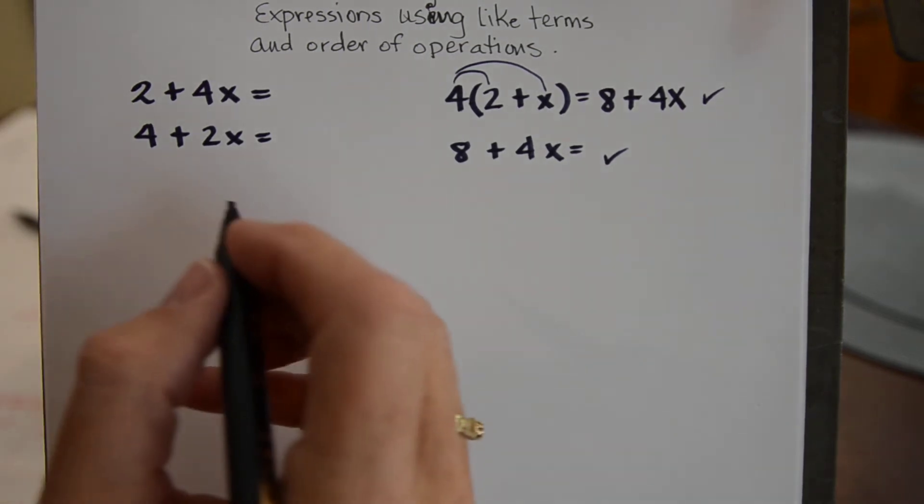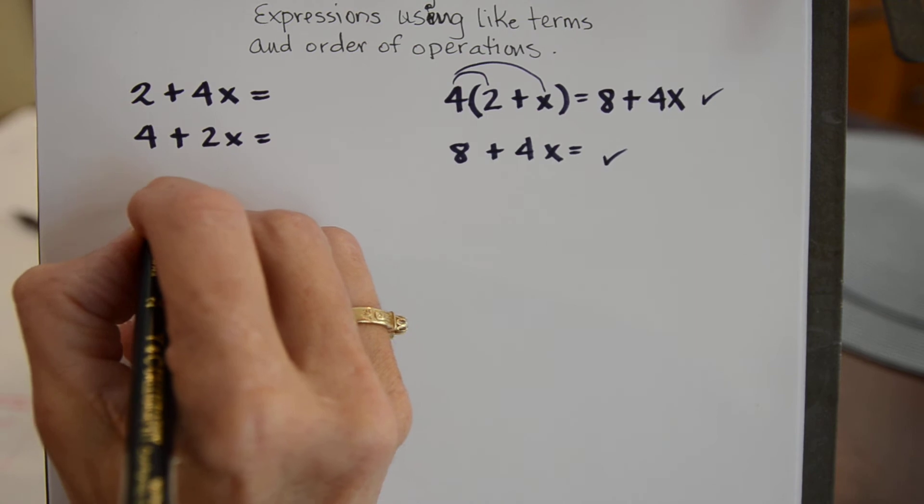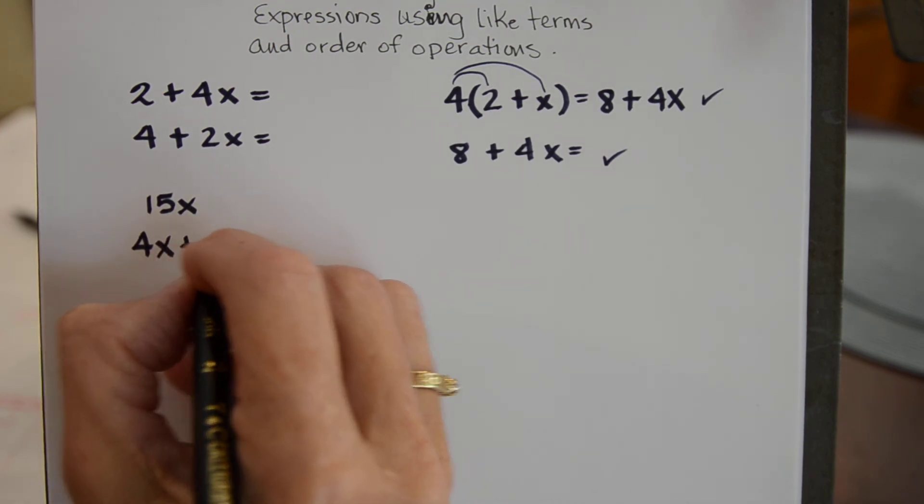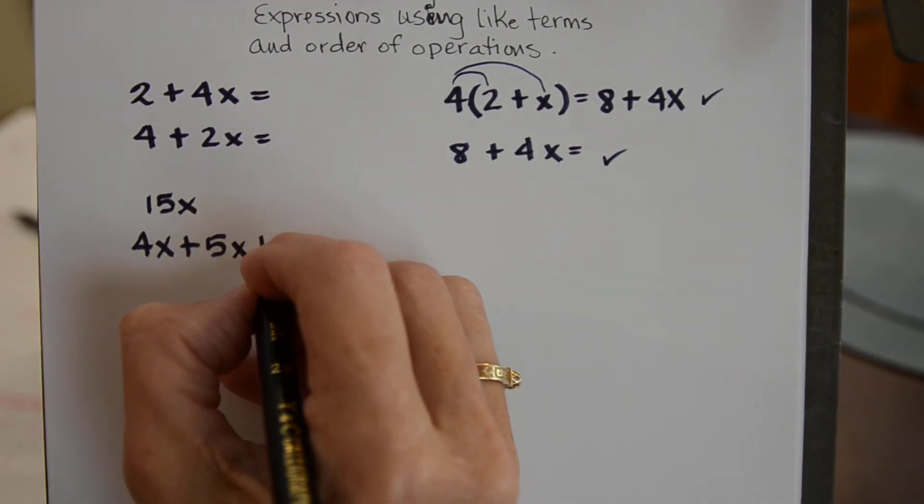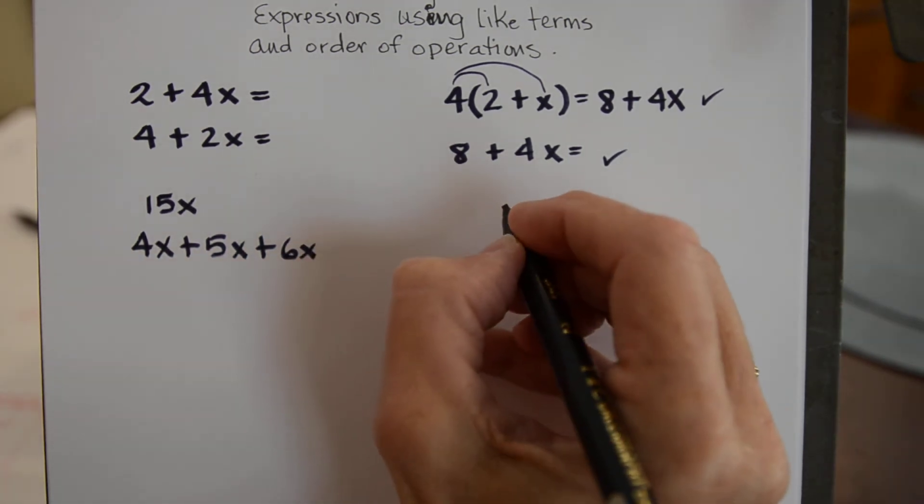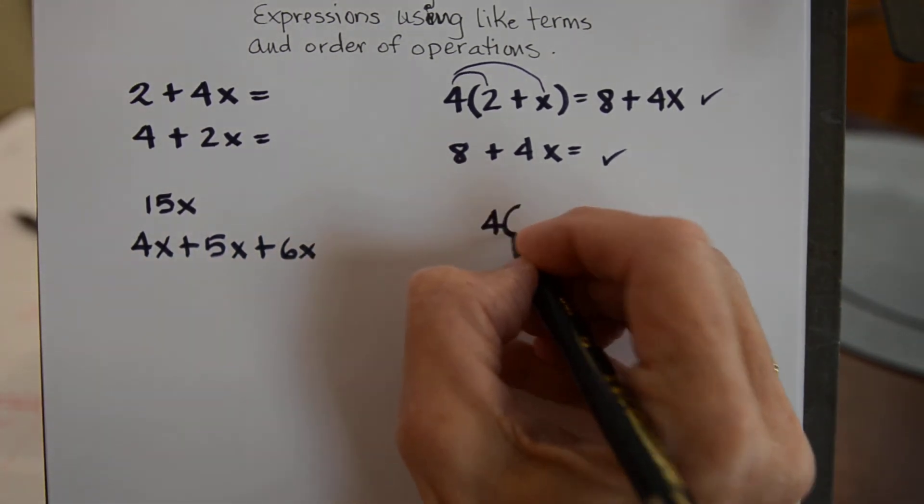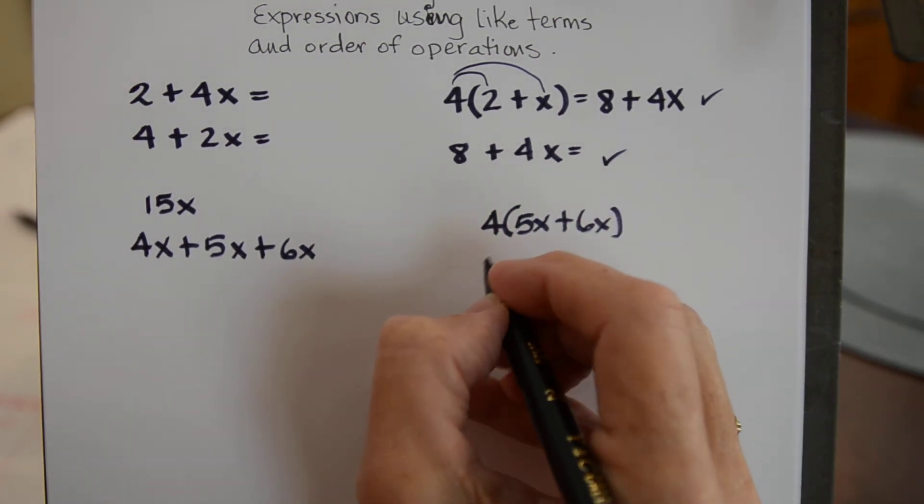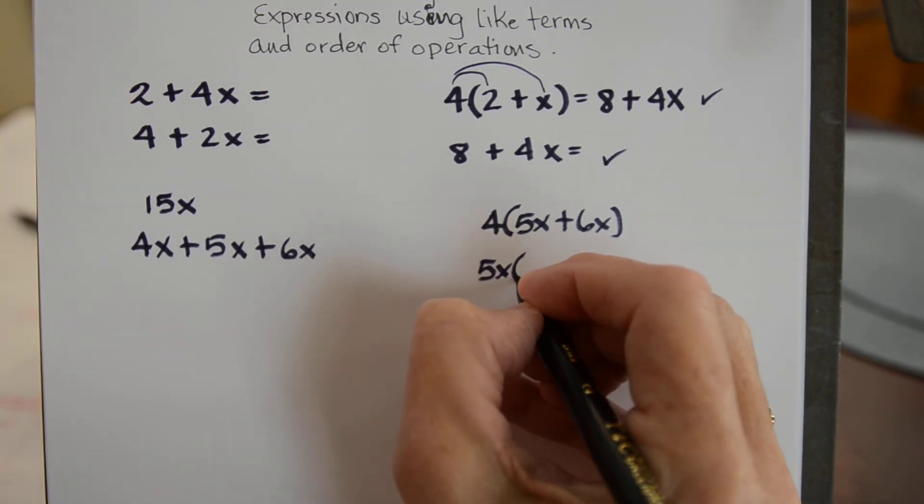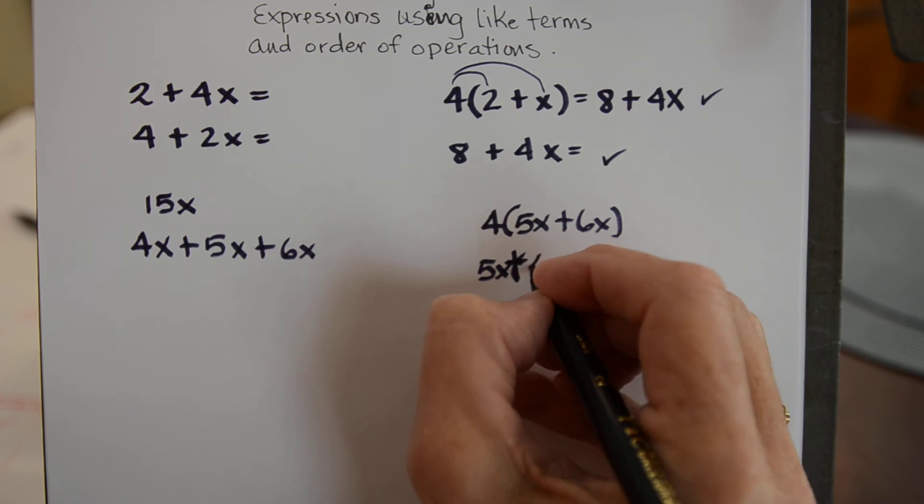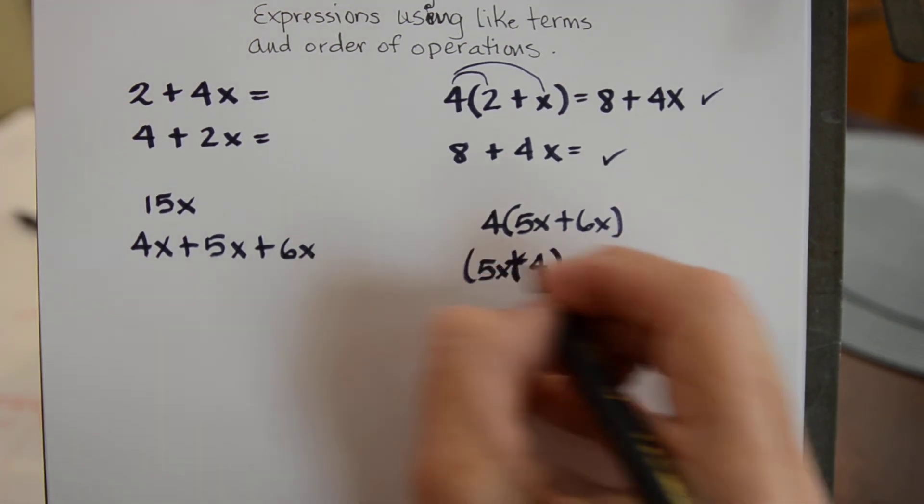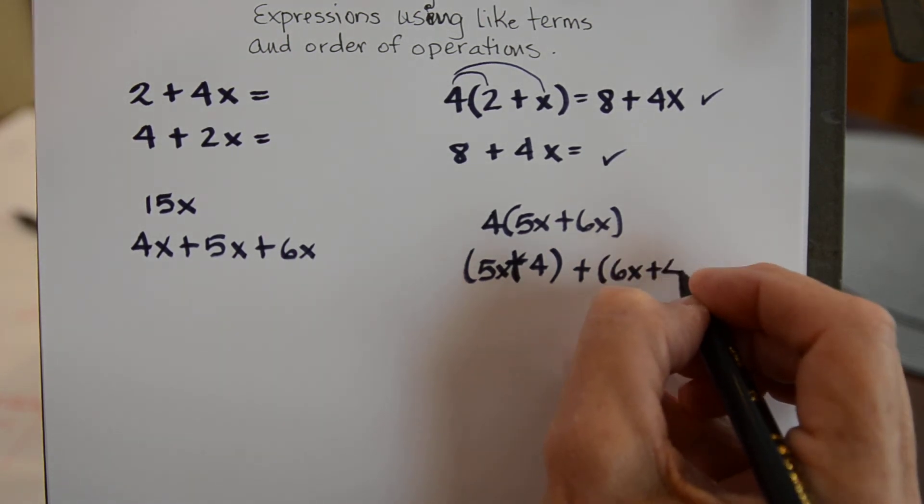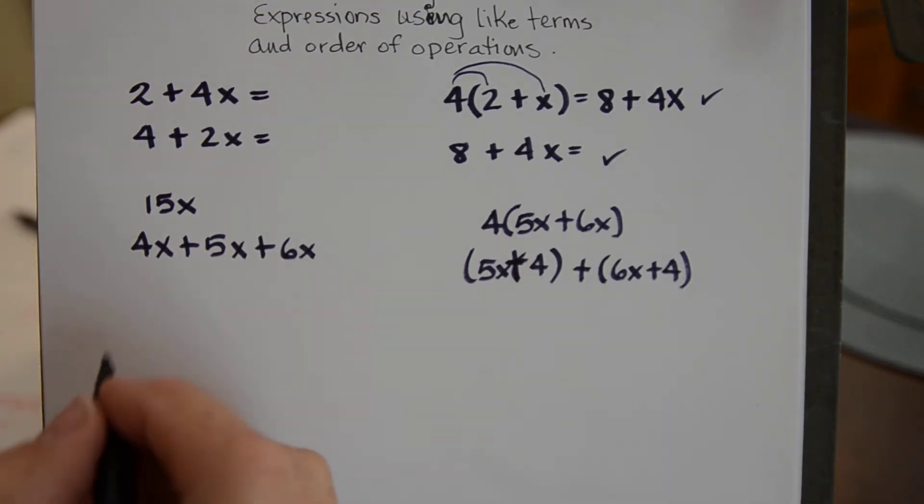If I had these choices and if I ask you which of these are equal to each other let's see what we come up with. And then I have 4 times 5x plus 6x and that's a plus 4 parenthesis plus 6x plus 4. Okay, let's see what we can do to simplify any of these.